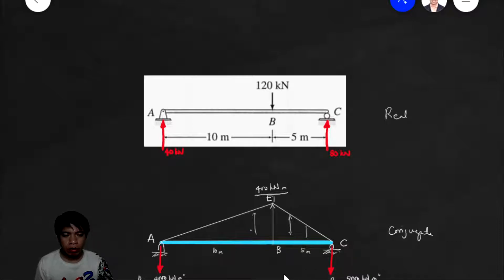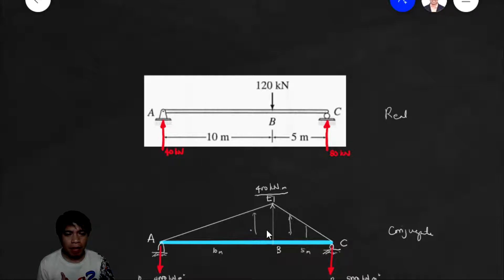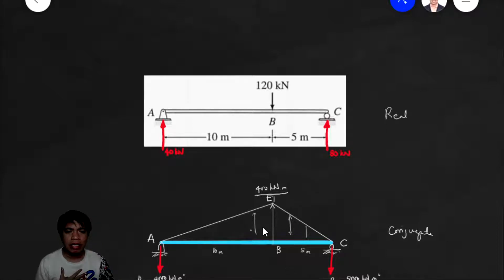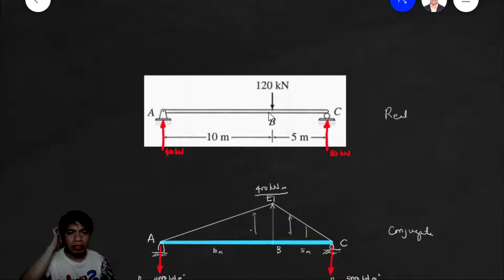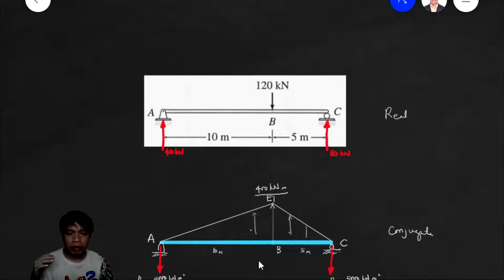Take note: the moment diagram above the horizontal must have an upward direction. If the moment diagram is below, the direction must be downward. In this case, the direction must be upward — don't think of it like a load on the real beam. Usually for loads on the real beam, if they are above, their direction is downward. But here in the conjugate beam, if the moment diagram is above, it is upward. If the moment diagram is below, that is downward.